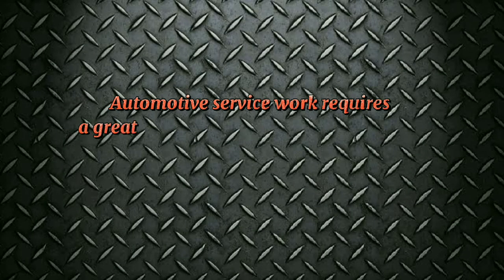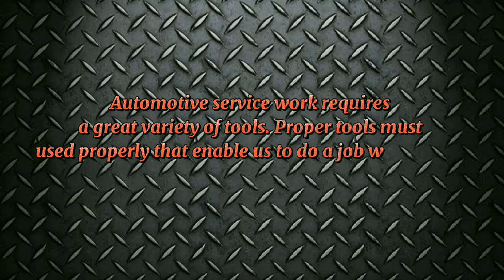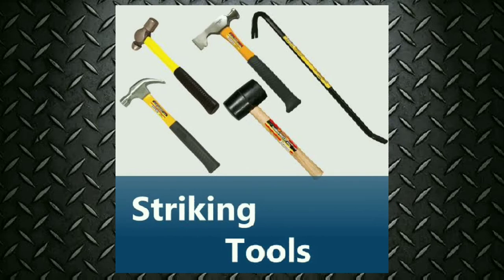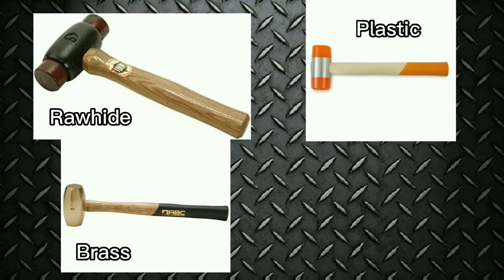Automotive service work requires a great variety of tools. Proper tools must be used properly to enable us to do a job with safety, speed, and efficiency. There are four types of basic hand tools: striking, turning, gripping, and cutting tools. Striking tools — hammer: a hand tool used for striking. Ball peen hammer, also known as a machinist's hammer, is a type of peening hammer used in metalworking. It has two heads, one flat and the other — called the peen — rounded. Other types include rawhide, plastic, brass, and rubber hammers, used to strike easily marred surfaces.